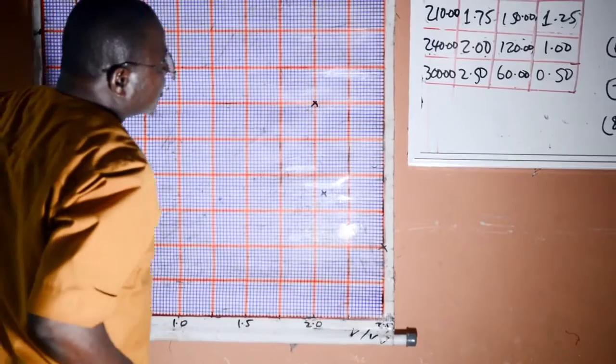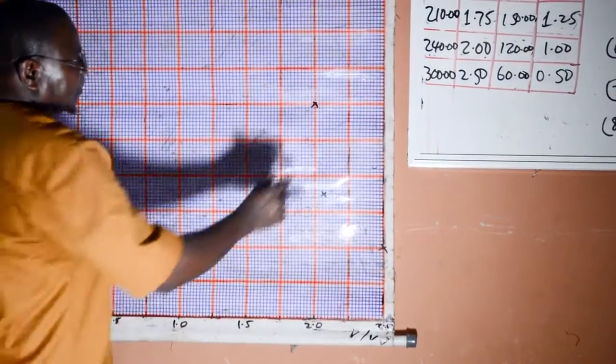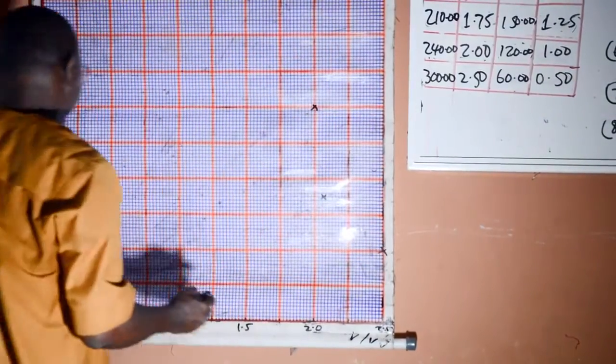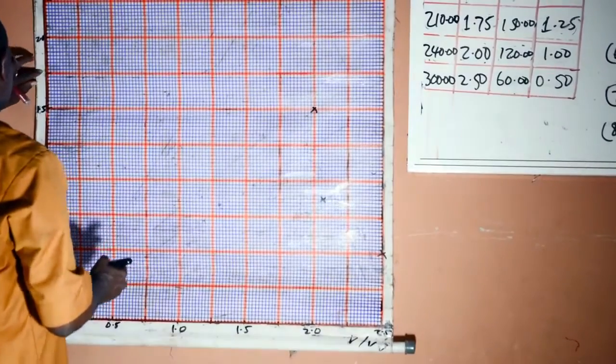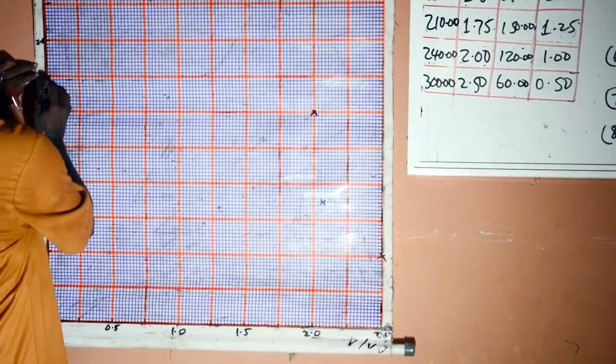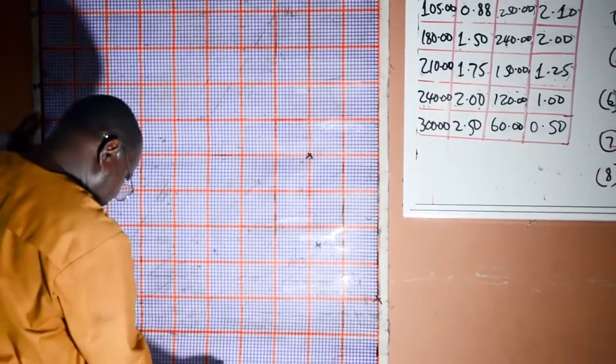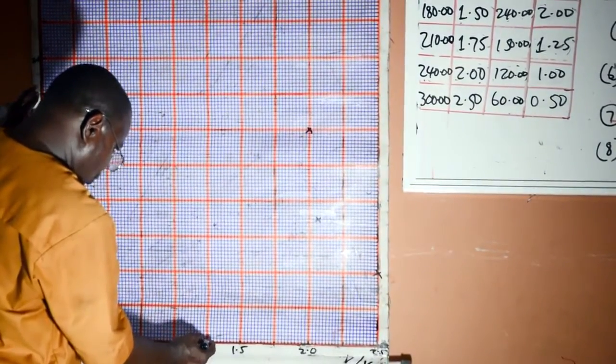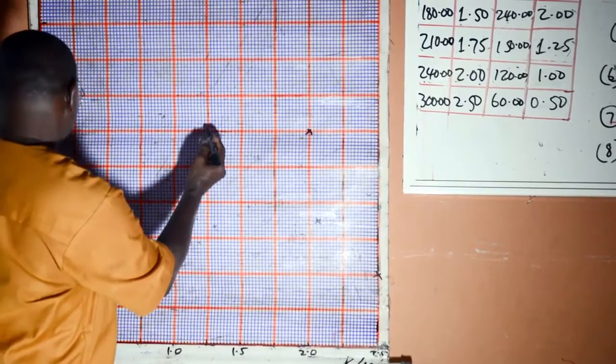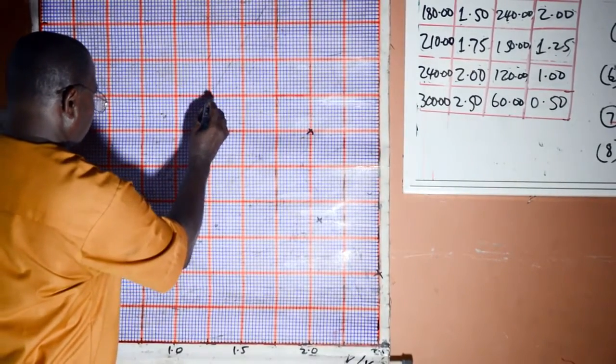The next one is 1.75 against 1.25. 1.75, this is 1.75 against 1.25. This is 1.5, this is 1.25 here.